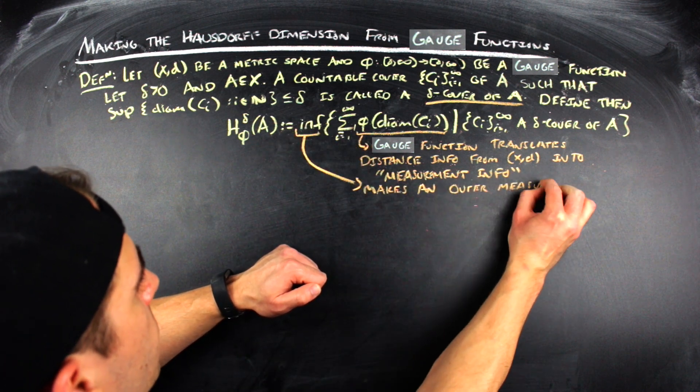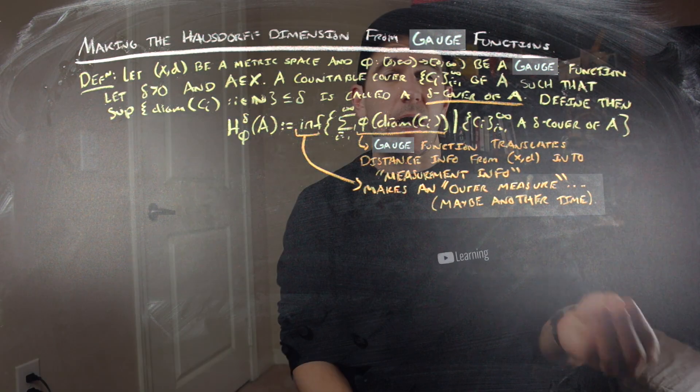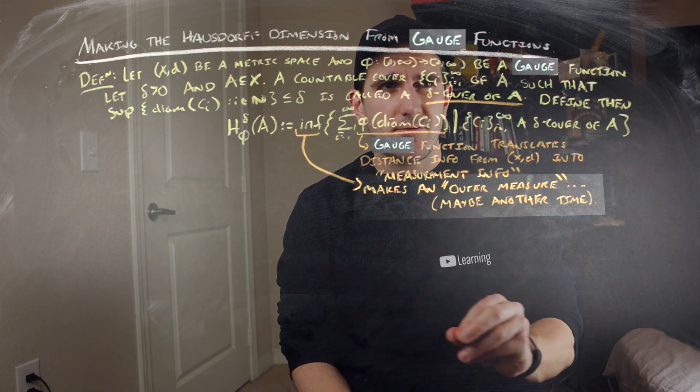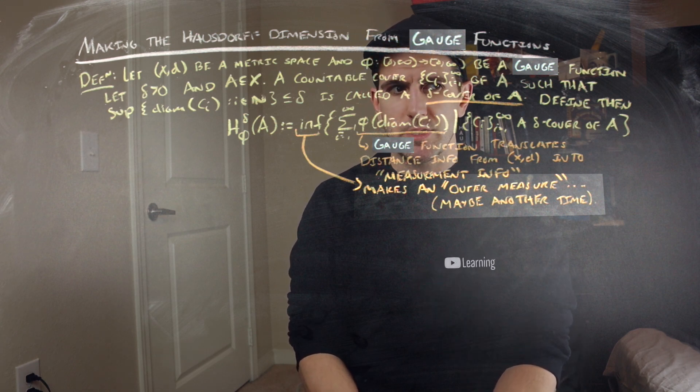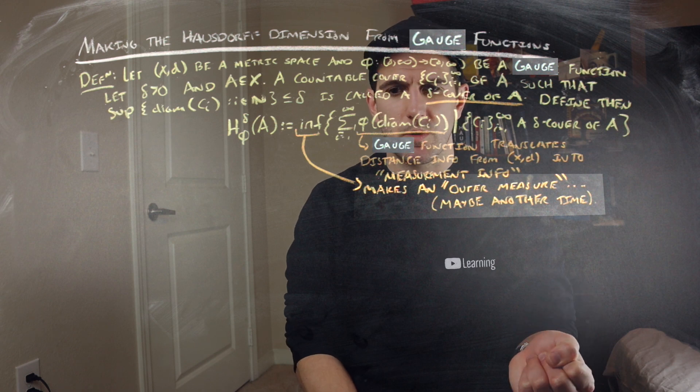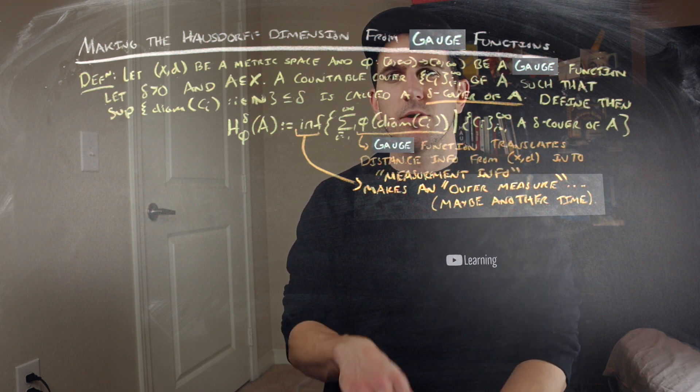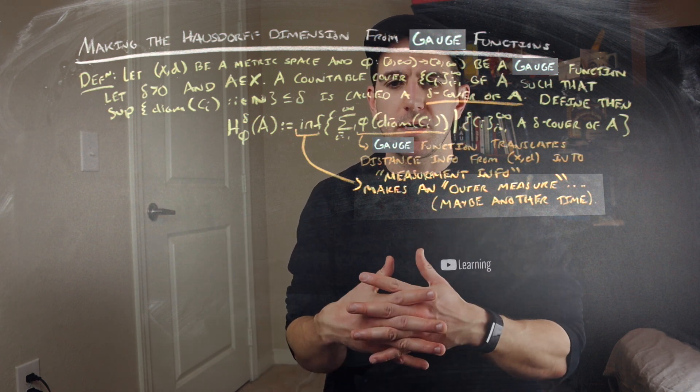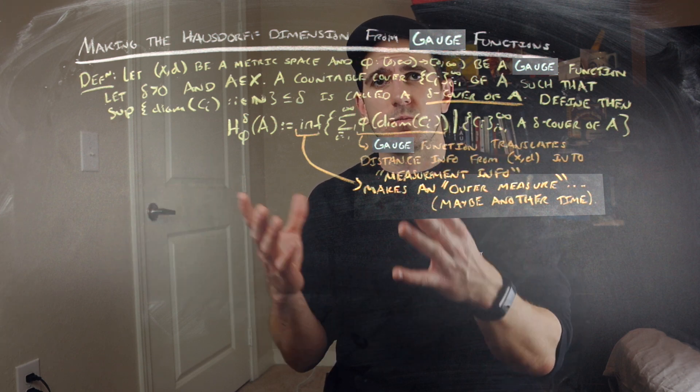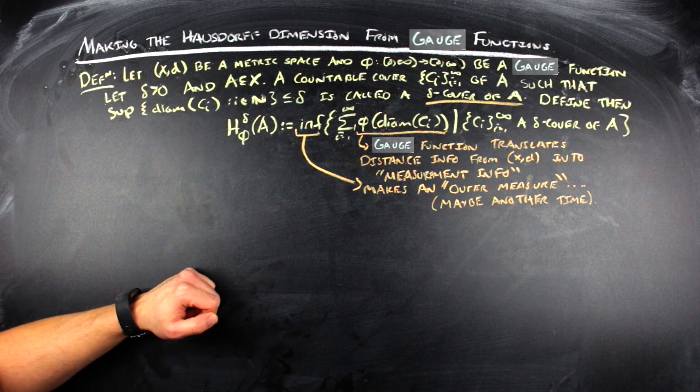There's a few things going on here. The first thing is that φ being a gauge function, what gauge functions actually do is that they take this information about the metric and translate it into this relevant measure type information. You can think about this more intuitively with the segment and the box. In the case of the segment, the gauge function is just the identity, so distance is the correct thing to measure with. In the case of the box, the gauge function is going to be t², or some constant positive multiple of t², because it needs to take distance information, which is encoded in the diameter of the box, and translate it into information about the area, which we get from squaring length.